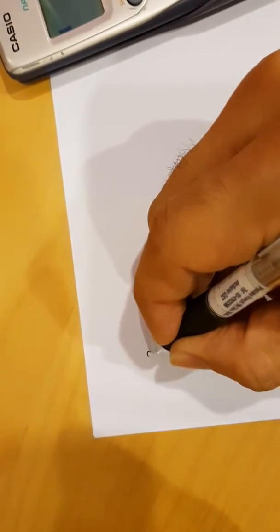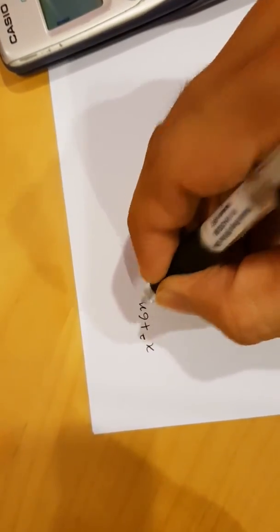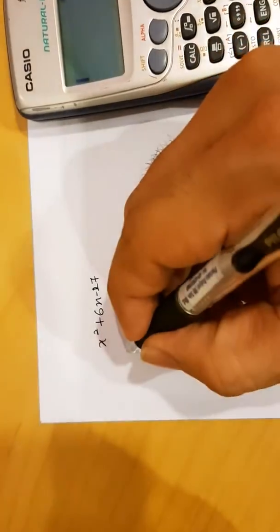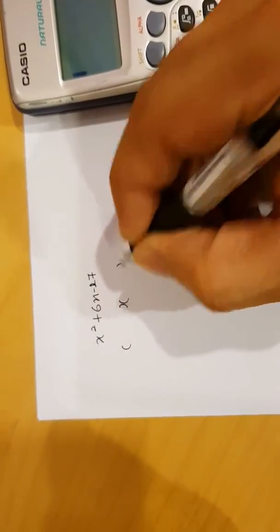Say we want to perform factorization. The first is this x squared plus 6x and minus 27. Factorization meaning you would get two brackets. One bracket and two bracket.